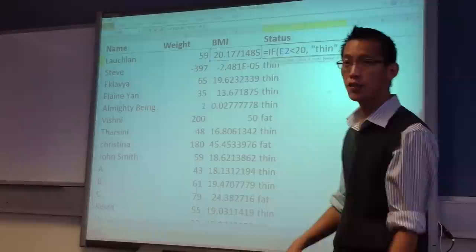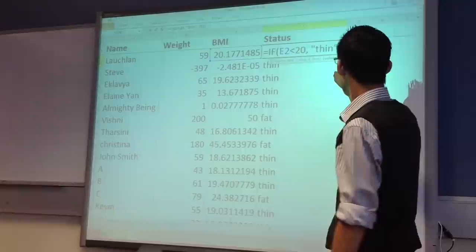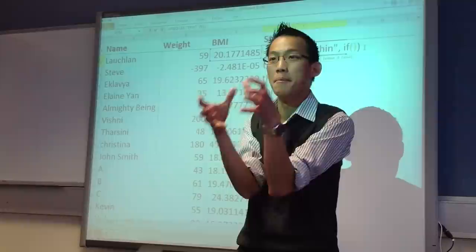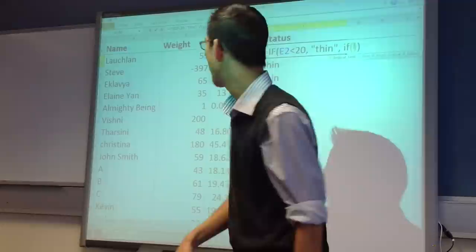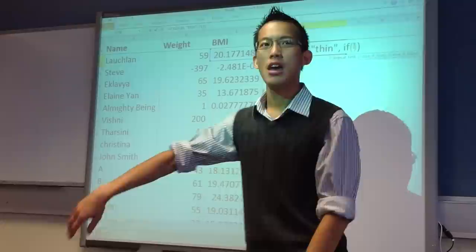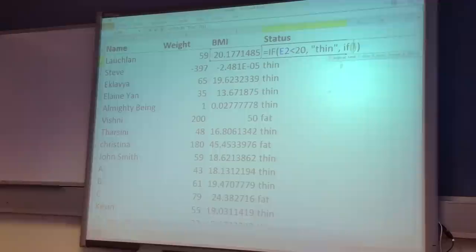But within this third thing, I've got a whole other IF thing. And you can see that the green brackets are trying to tell you, this is one little compartment on its own. Now what do I put in here? Well, I'm going to go the same way. So let's say that if you're less than 20, you're thin. If you're less than, say, 30, let's call that average. So under 20, thin. Now under 30, average.